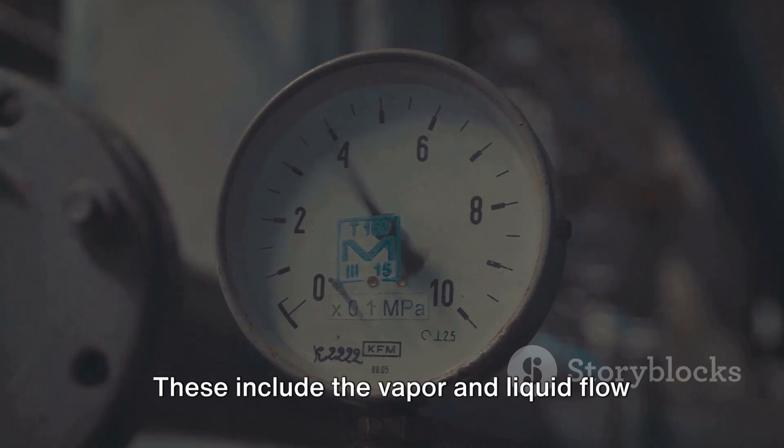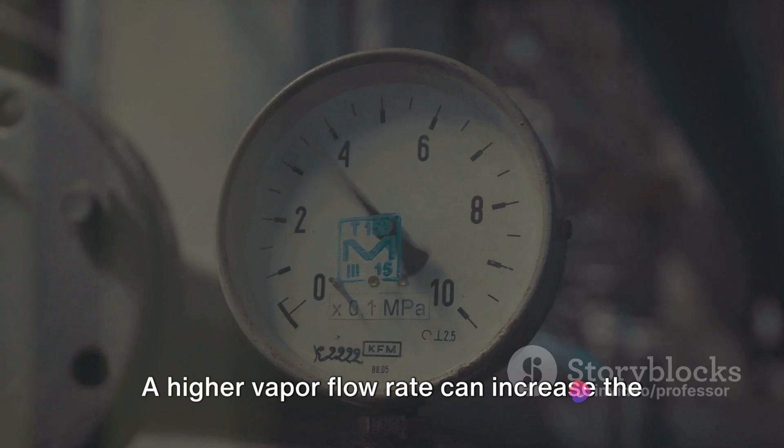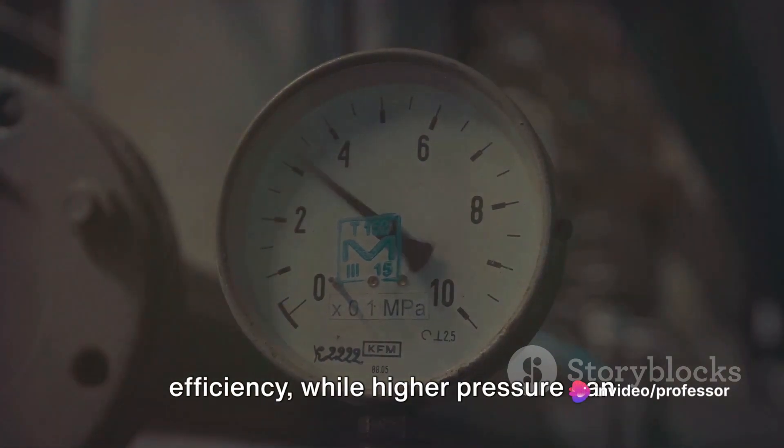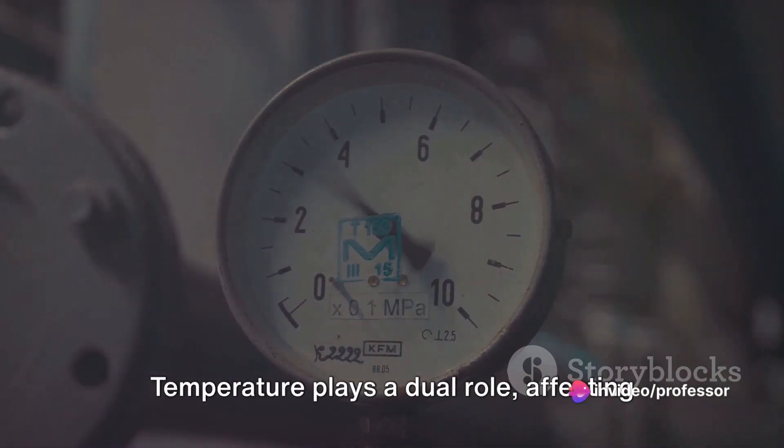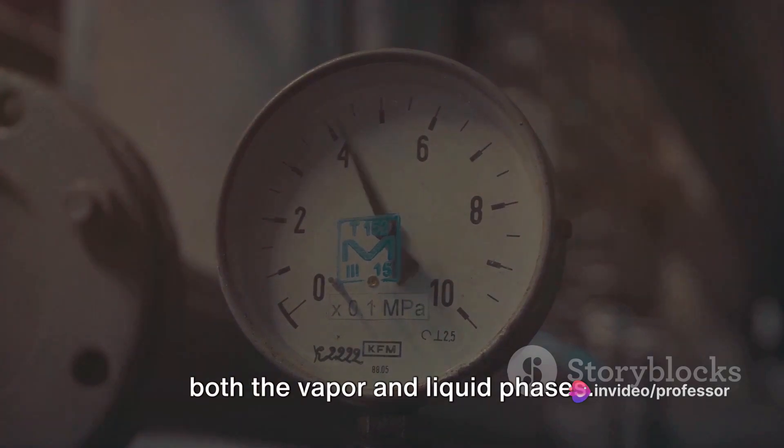These include the vapor and liquid flow rates, the column's pressure, and the temperature. A higher vapor flow rate can increase the efficiency, while higher pressure can reduce it. Temperature plays a dual role affecting both the vapor and liquid phases.